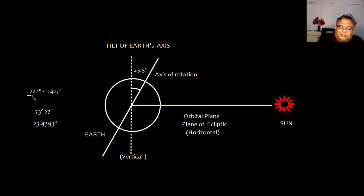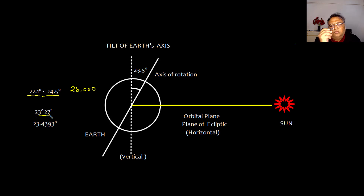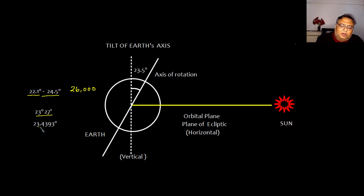This angle varies from 22.1 to 24.5 degrees for an approximate cycle of 26,000 years. To be precise, the present value is 23.4393 degrees.